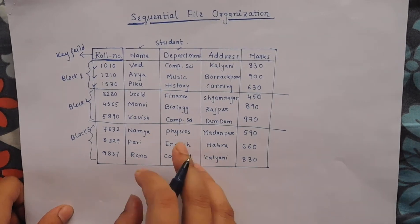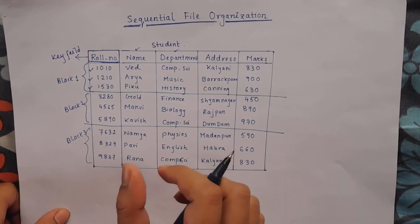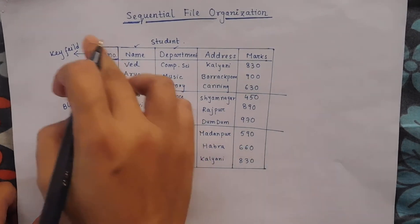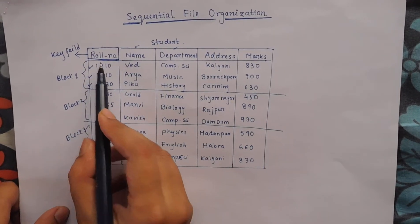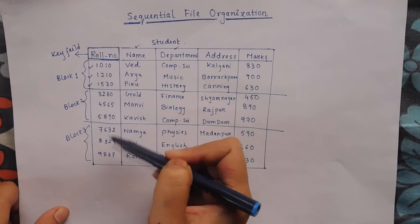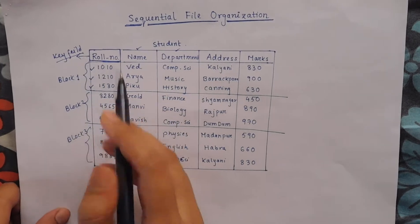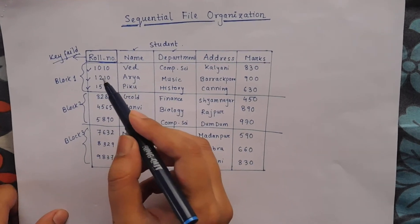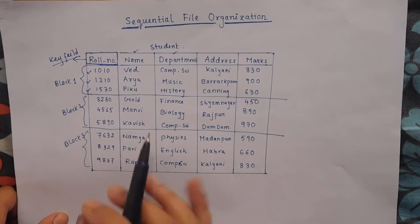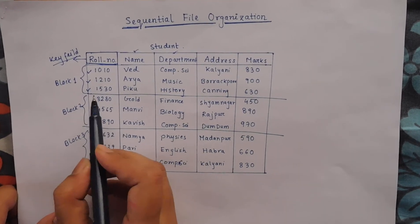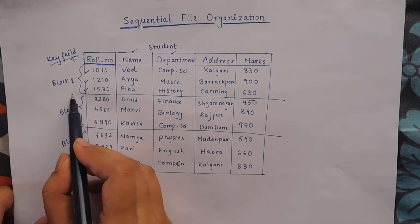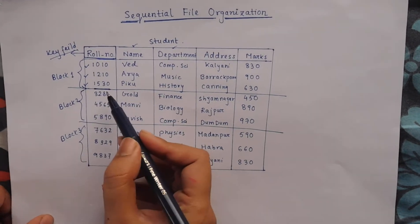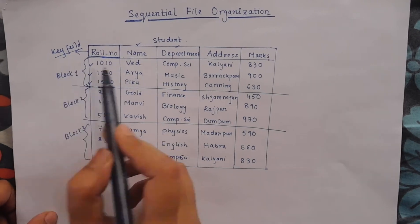In a sequential file, when we want to insert some data, it must be in ascending or descending order with respect to the key values. Here we can see the roll numbers are in ascending order — this is the key field. So the key field must maintain an order, either ascending or descending. Here we maintain ascending order, so when we insert data with roll number 1531, it must go only in the correct ordered location.